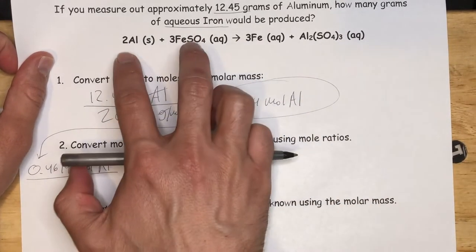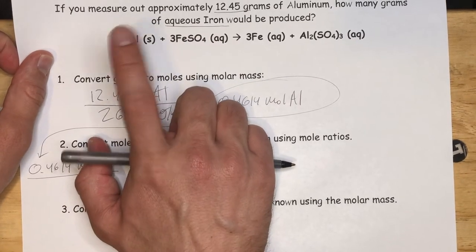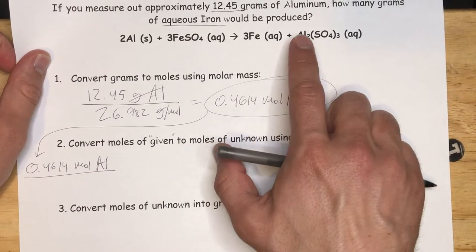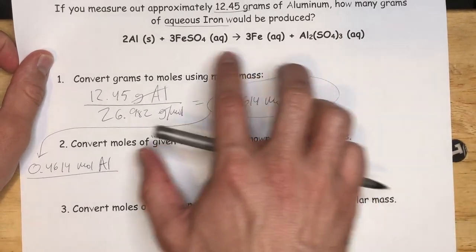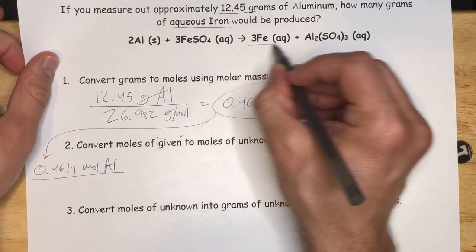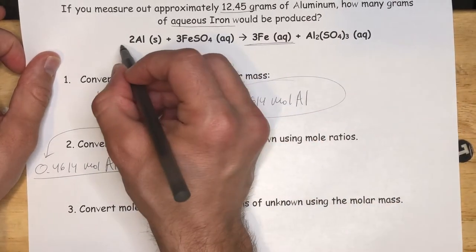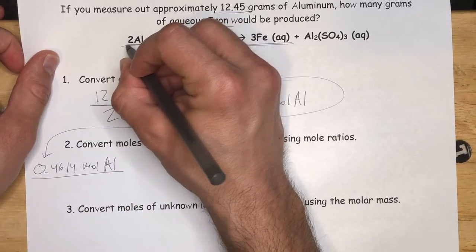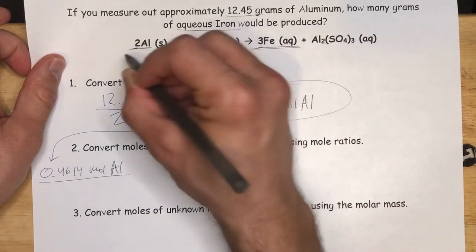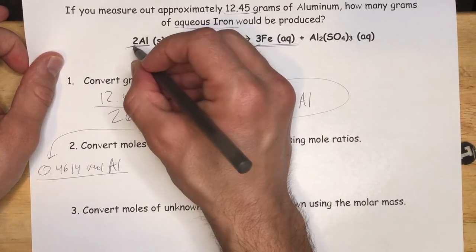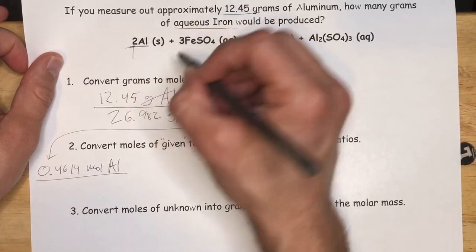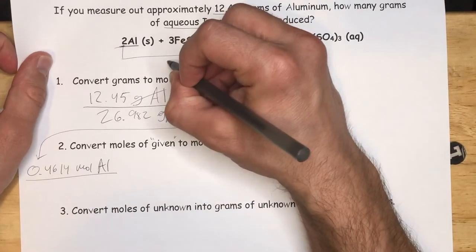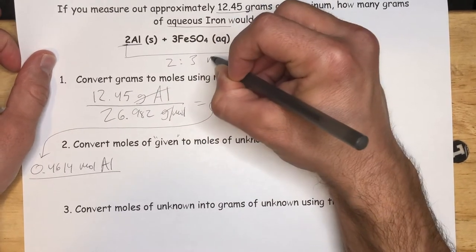Aqueous iron. Let's find that in this reaction. This is the reaction, the chemical equation that the question is asking about. So if Al and FeSO4 react to make Fe, Al2(SO4)3, then the only place I see aqueous iron here is this. We're given aluminum. We're looking for aqueous iron. So we need to look at what the mole ratio is. The mole ratio is going to be what the ratio of coefficients for each of those elements is.